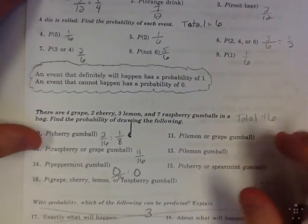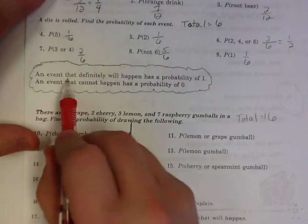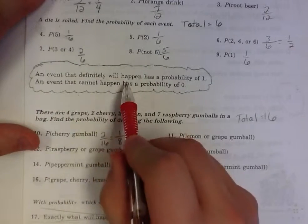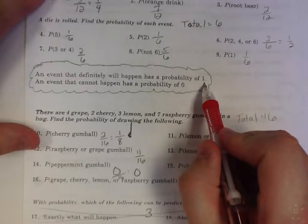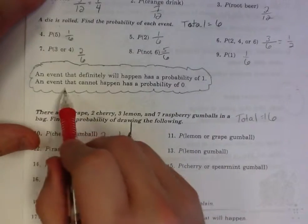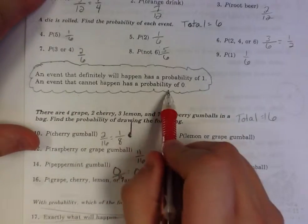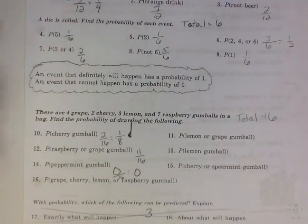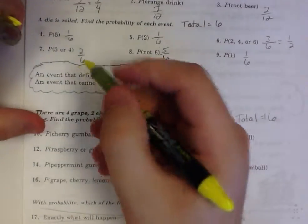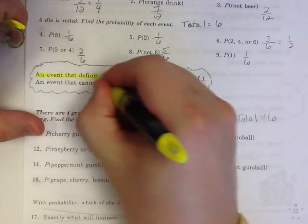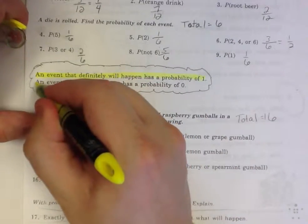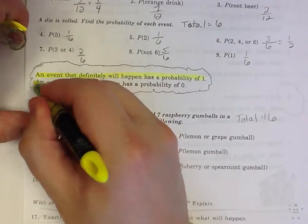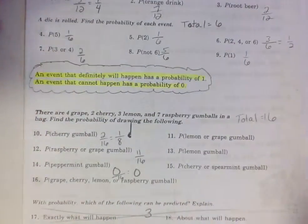Here's something that is important. An event that definitely will happen has a probability of one. An event that cannot happen has a probability of zero. That's really important. If it's definitely going to happen, the probability is one. If it can never happen, the probability is zero.